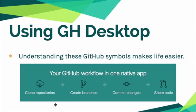You've got your option to clone the repositories, create branches, commit changes, and share the code. Once you know what the symbols are, they're pretty self-explanatory, but when you first look at them you might think 'what is this circle thing?' So we've got clone, branch, commit, share. I'm going to take a minute in our next video to show you the desktop client so you can become familiar with that.